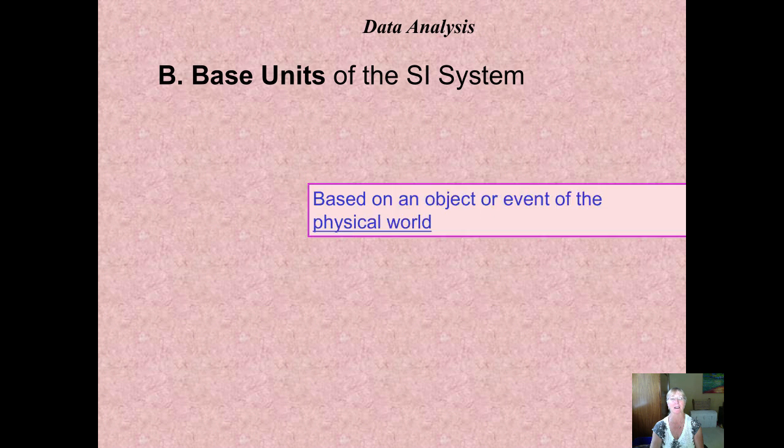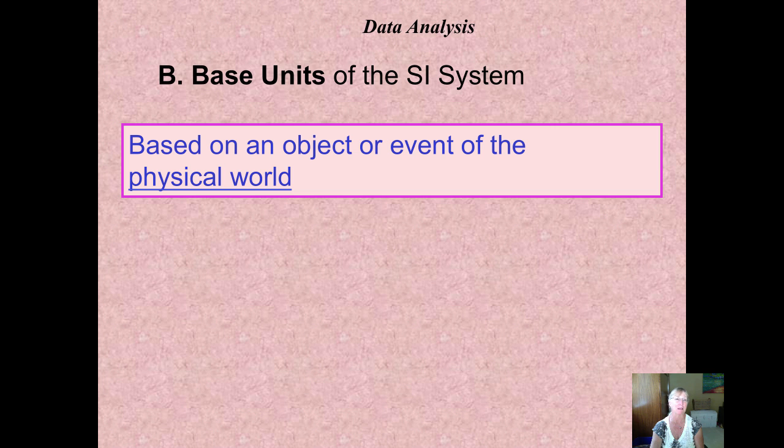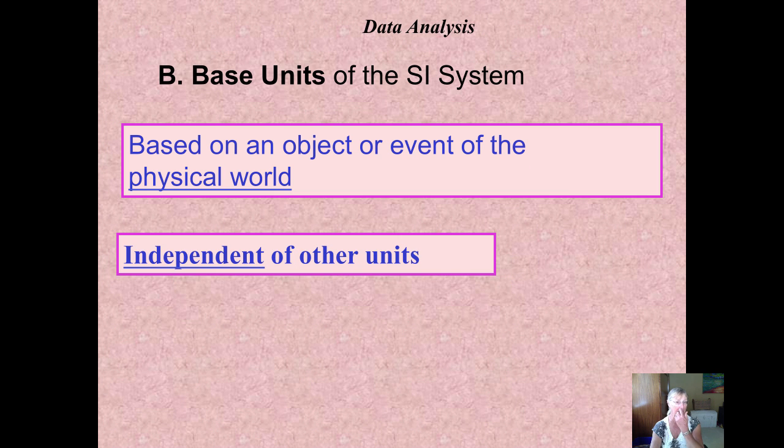Now the system international is based upon seven base units and these are actual objects or an event in the physical world. They stand independent of other units.